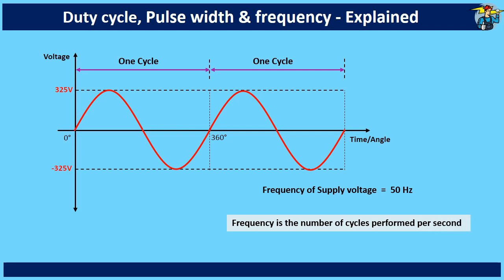Frequency is the number of complete cycles performed in one second. Period or periodic time is the time consumed to complete one sinusoidal cycle. Therefore, to find the periodic time, divide one second by the number of cycles performed in a second.